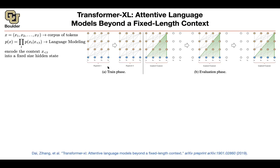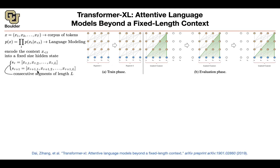So how are we going to do it? Let's write it mathematically. Let's set tau to be 1, so you're going to have S1 and S2 — segment 1, segment 2. Segment 1 is going to have X1, X2 up until X4, so L is 4. Segment 2 is going to have X1, X2 up until XL. So you have two consecutive segments, each with length L.